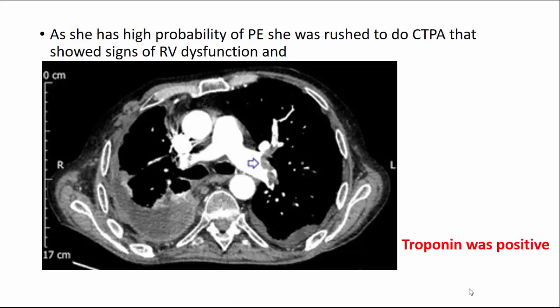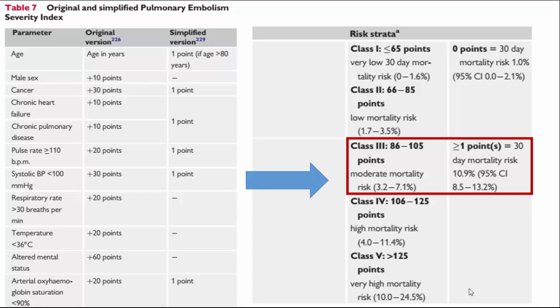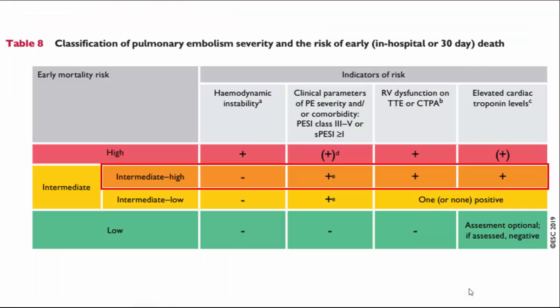As this patient has a very high probability of pulmonary embolism, CTPA was chosen as the diagnostic tool. It showed signs of right ventricular dysfunction and a large thrombus mainly in the left pulmonary branch, and troponin was positive. Risk stratification using the Pulmonary Embolism Severity Index (PESI) and simplified PESI showed very high 30-day mortality risk, placing this patient in the intermediate-high risk category due to hemodynamic stability — blood pressure not in shock and oxygen saturation not below 90%.